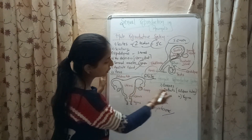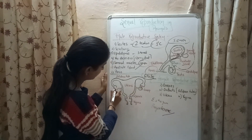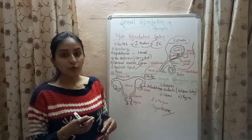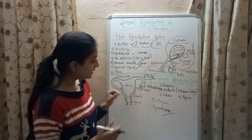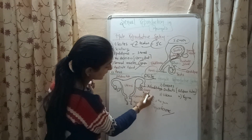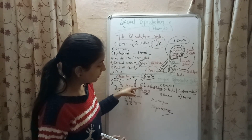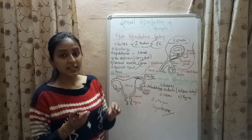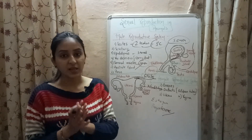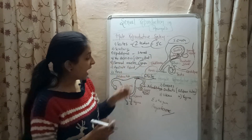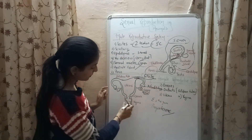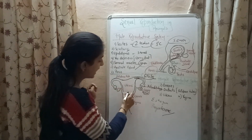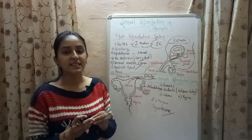The ovaries are connected to the oviduct or fallopian tube by finger-like structures known as infundibulum. After the attainment of puberty, the ovaries release an ovum every 28 days, and this ovum is received by the infundibulum, which passes it on to the oviduct. It is inside the oviduct where fertilization of the ovum takes place. During copulation, sperms released from the penis of the male enter the vagina, then pass through the cervix, into the uterus, and finally reach the oviduct where fertilization occurs.